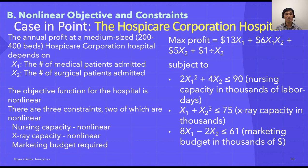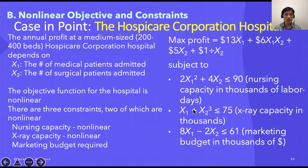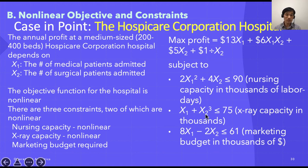There are three constraints. The first is nursing capacity: 2x1² + 4x2 ≤ 90, measured in thousands of labor days. About two nursing hours squared are required per medical patient, and four nurses are needed per surgical patient. The second constraint is x-ray capacity: x1 + x2³ ≤ 75. Medical patients generally do not need x-rays, but surgical patients almost always do — which is why the surgical patient term is cubed.